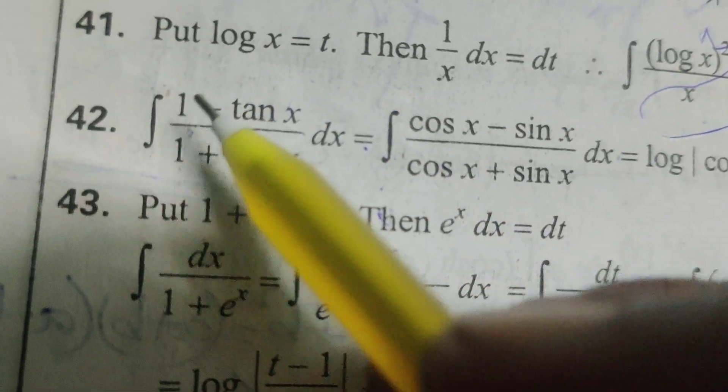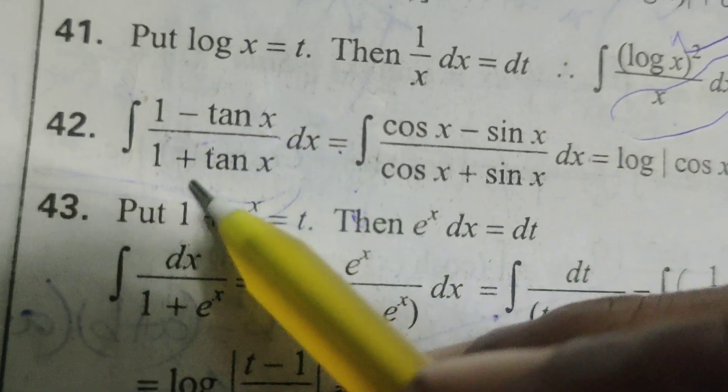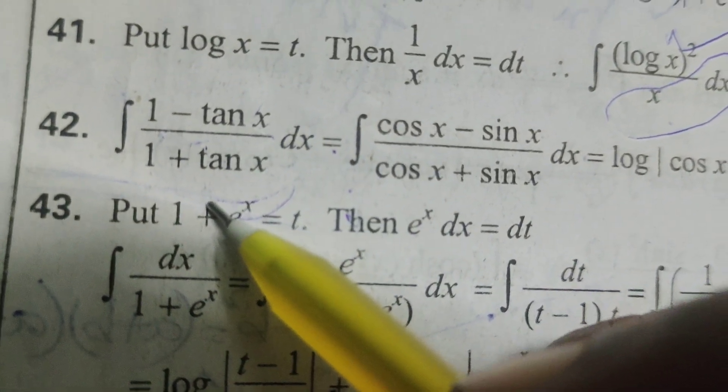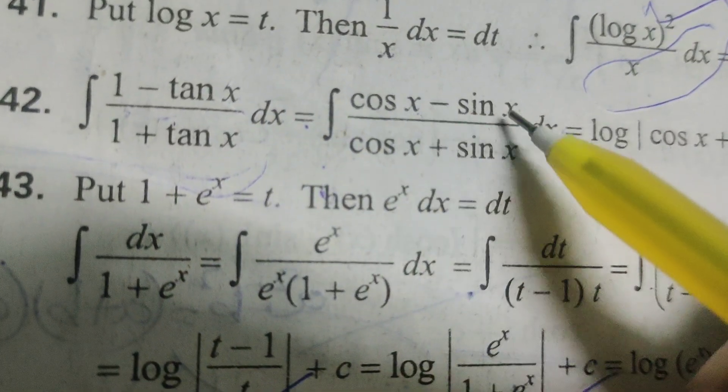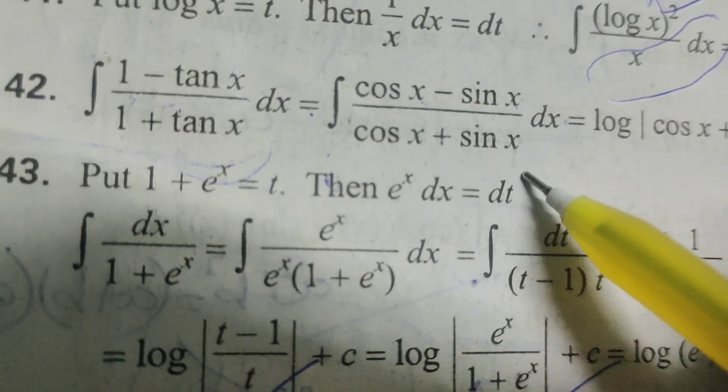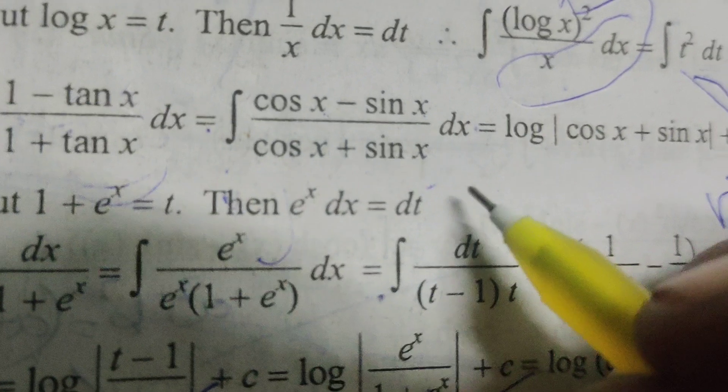This numerator cos x in this denominator will get again denominator cos x gets cancelled. Therefore (cos x minus sin x) by (cos x plus sin x) integral of into dx.